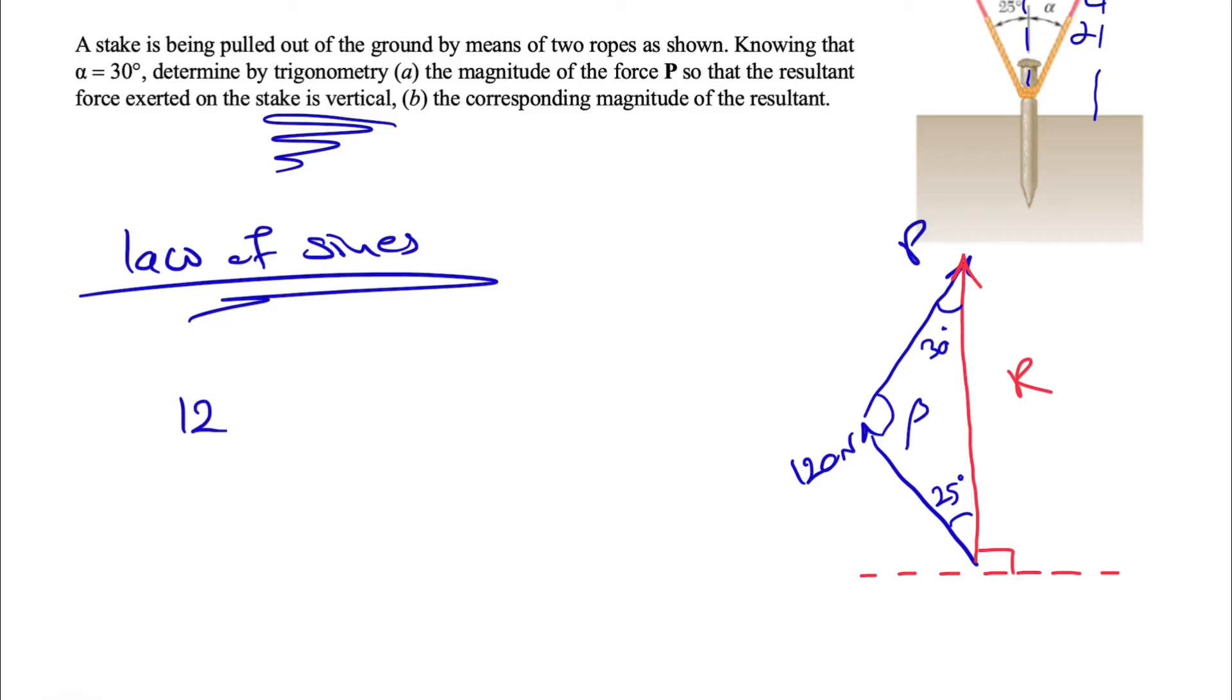If we want to find P, we have P over the angle, which would be what we have in here or sine of 25 degrees. And from here we can find P easy enough.